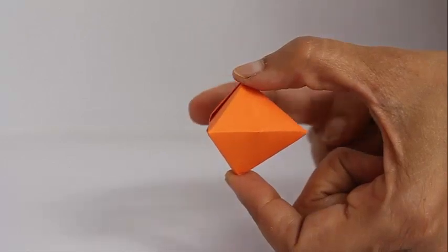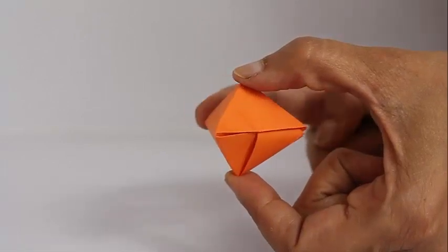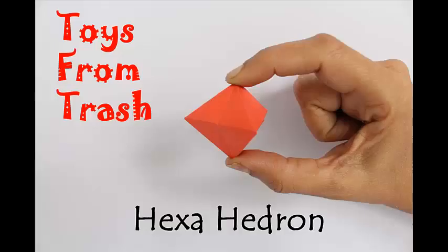You might have seen an octahedron, but we can also fold a hexahedron using a square paper. These are two pyramids with triangular bases sitting on top of each other. The base of each triangular pyramid is an equilateral triangle, as you can see here, and the sides of the pyramid are right isosceles triangles.